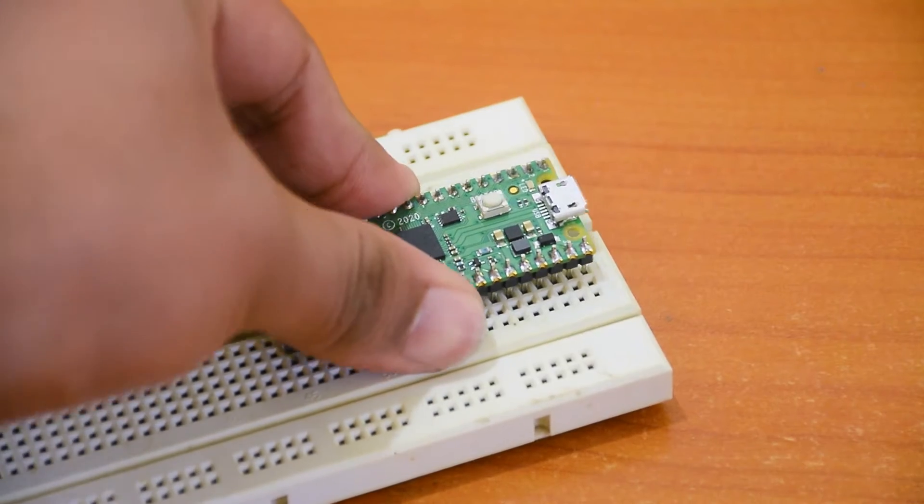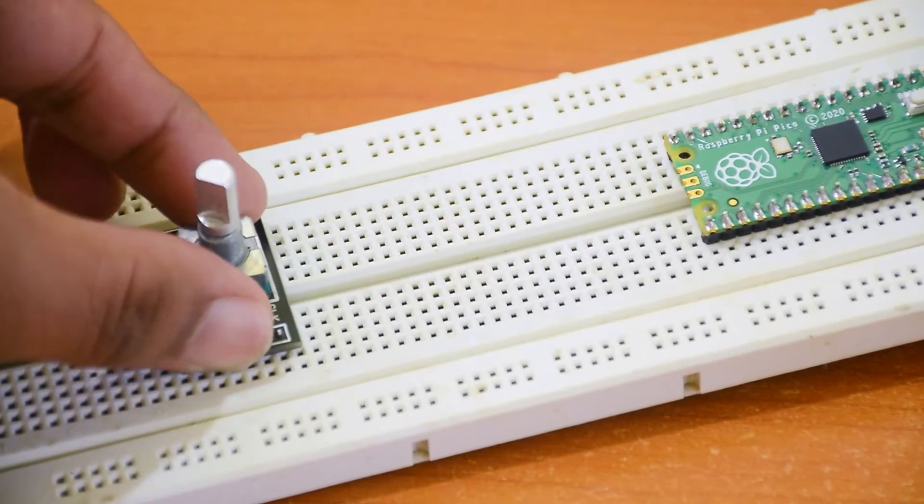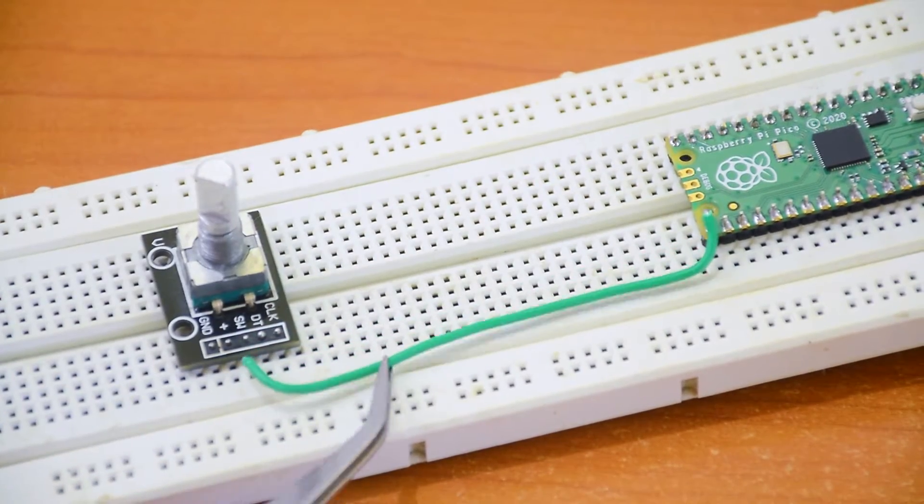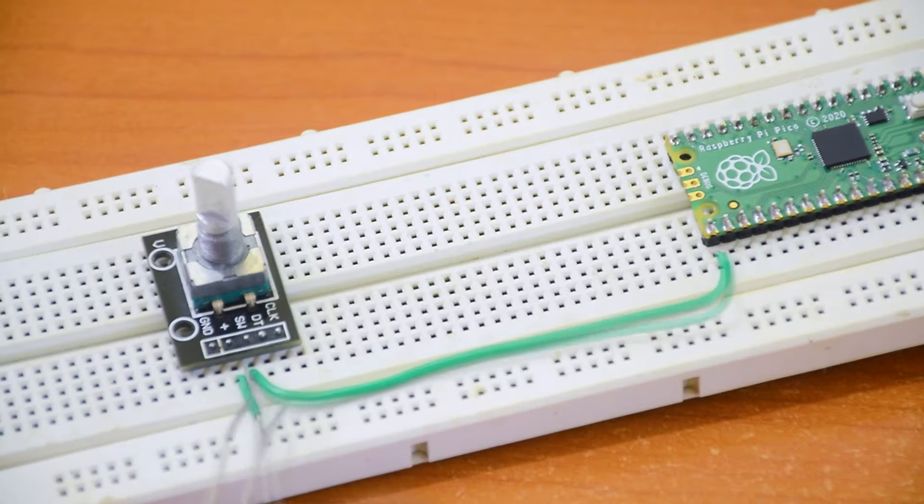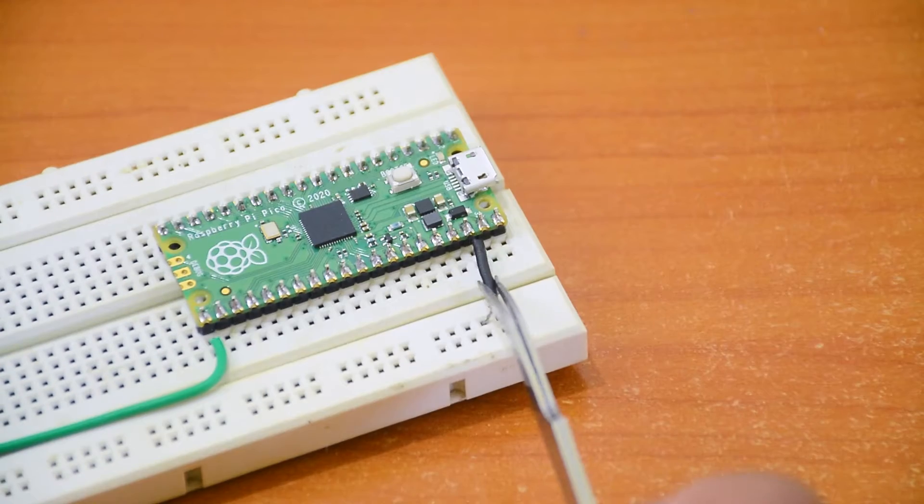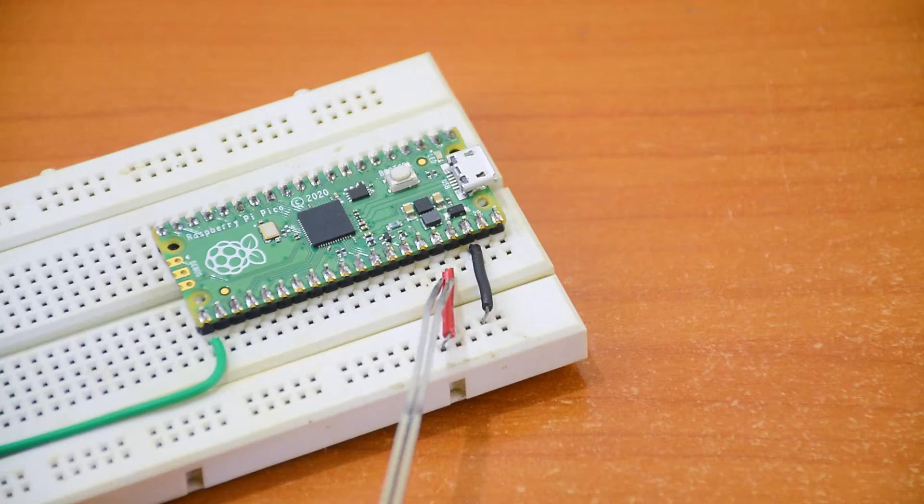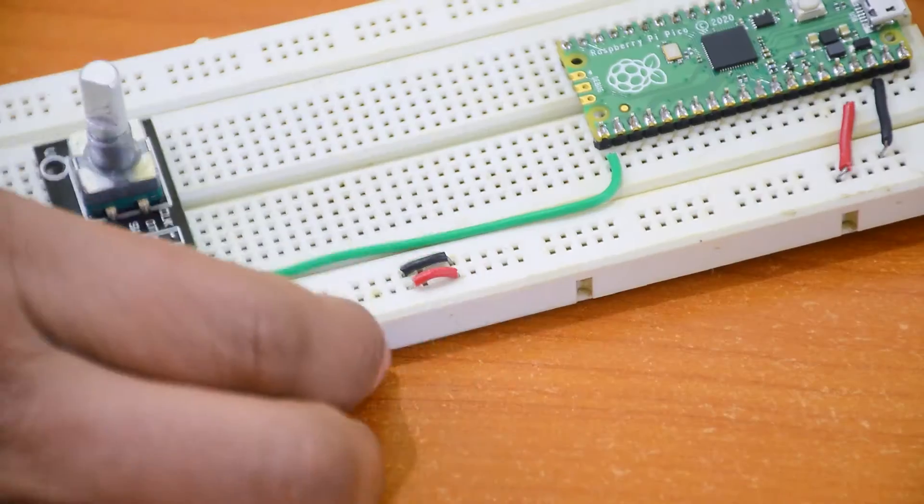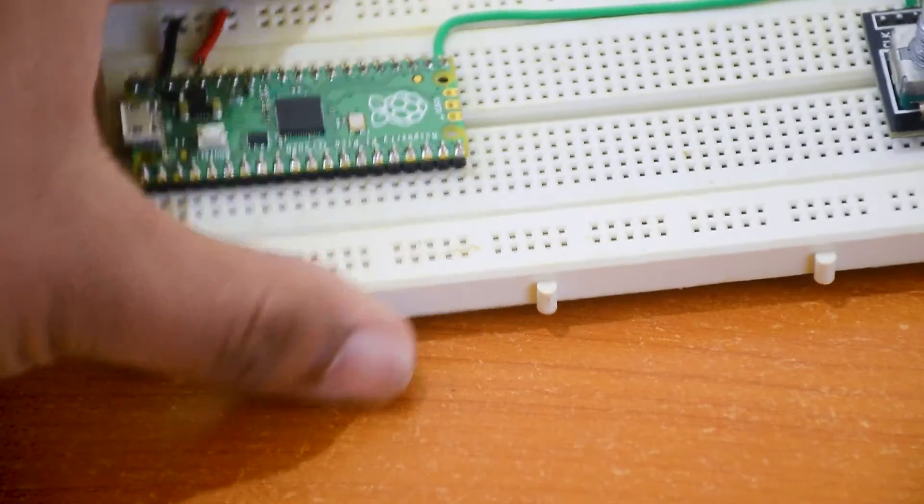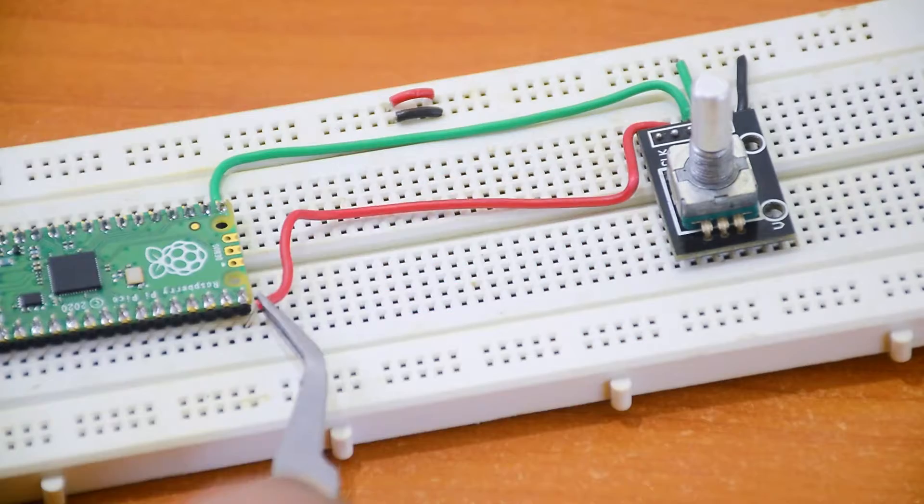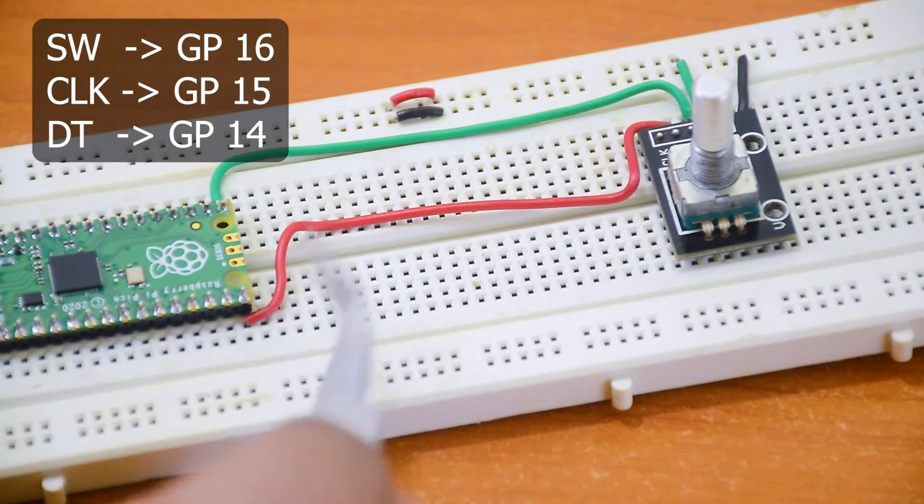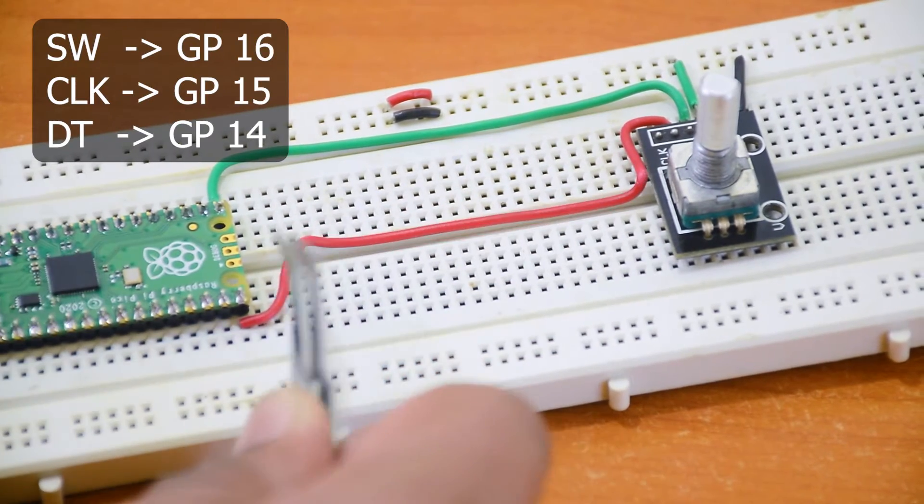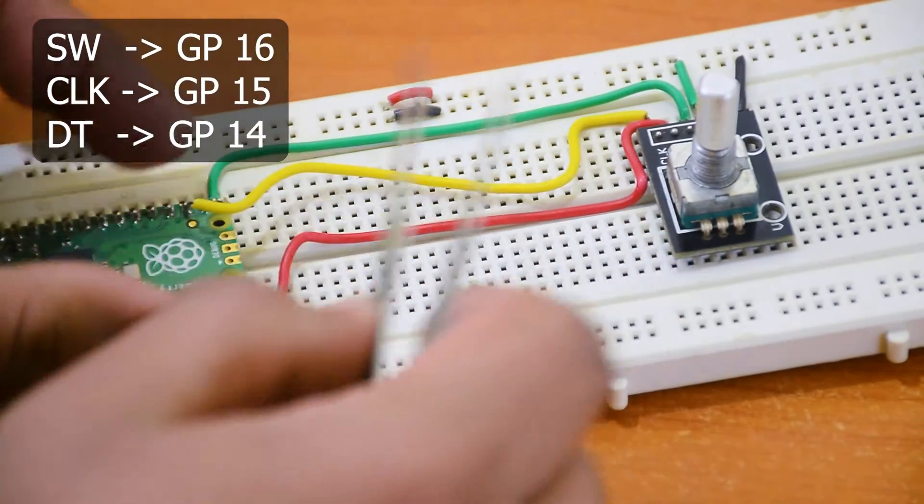Let's connect everything. Connect SW to GP16, connect the power, connect CLK to GP15, and DT to GP14.